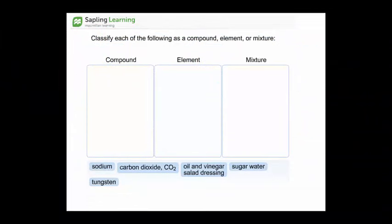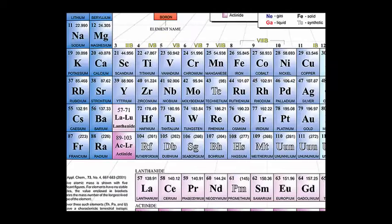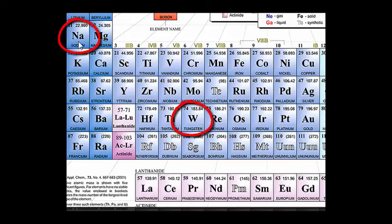Here we're asked to classify each of these substances as compound, element, or mixture. Sodium and tungsten are found in the periodic table. So these two are elements. Here's part of the periodic table showing sodium and tungsten.